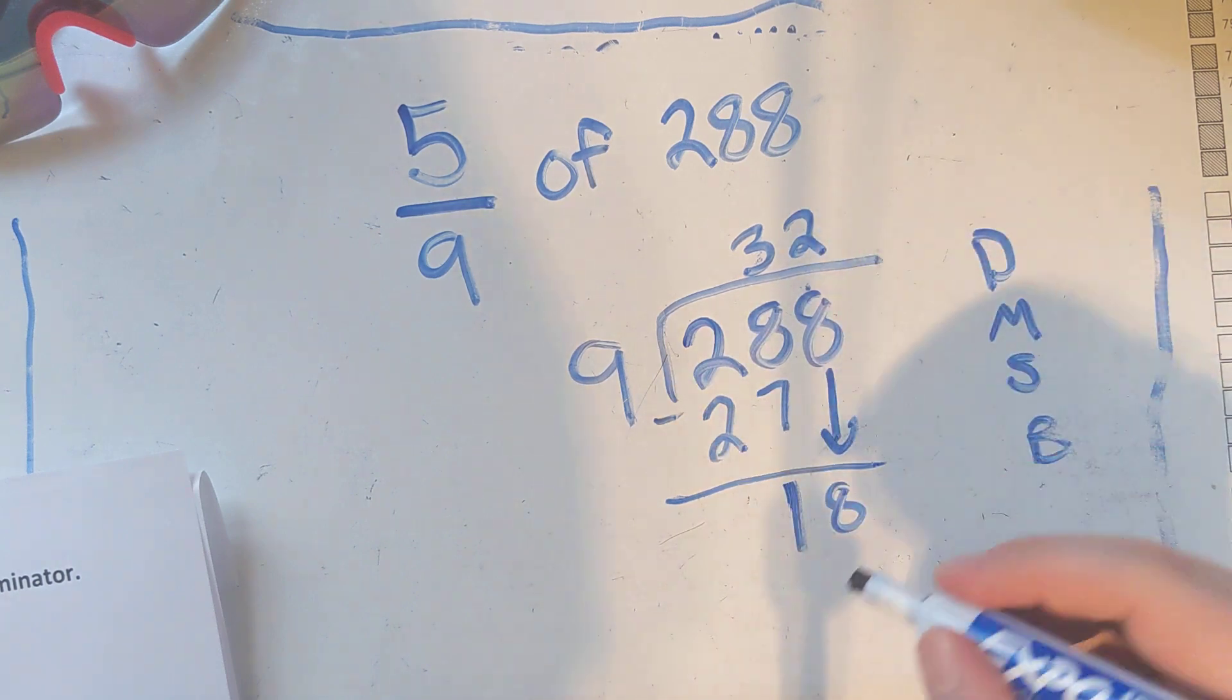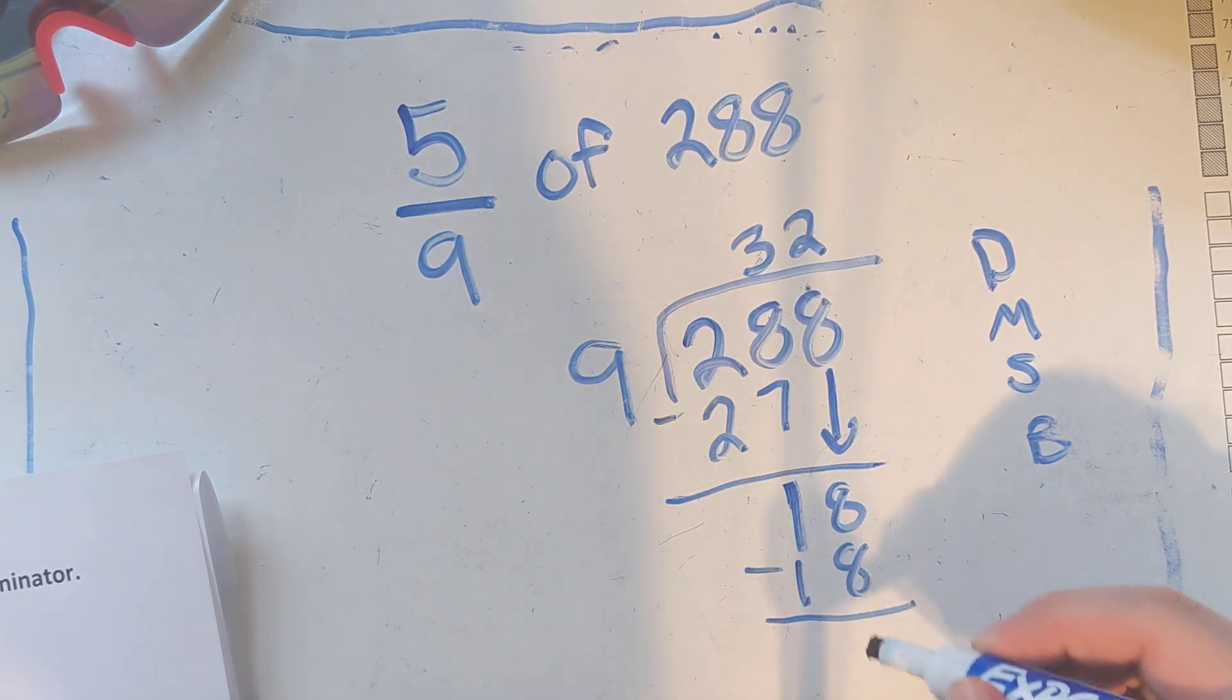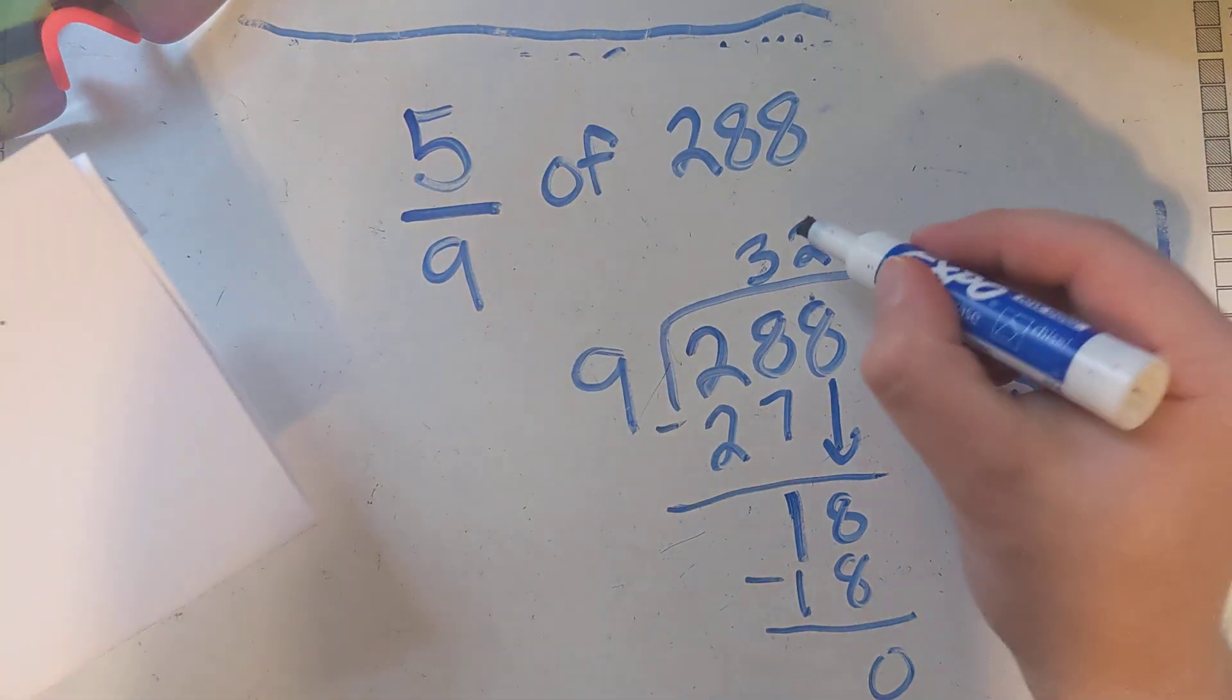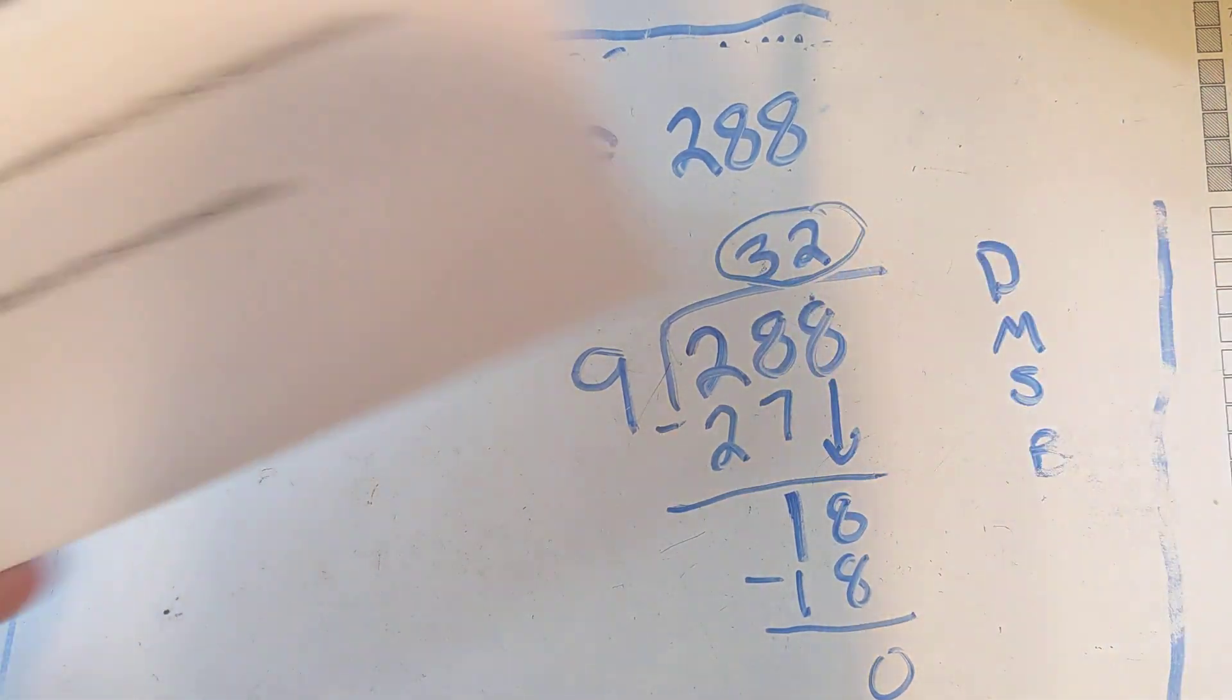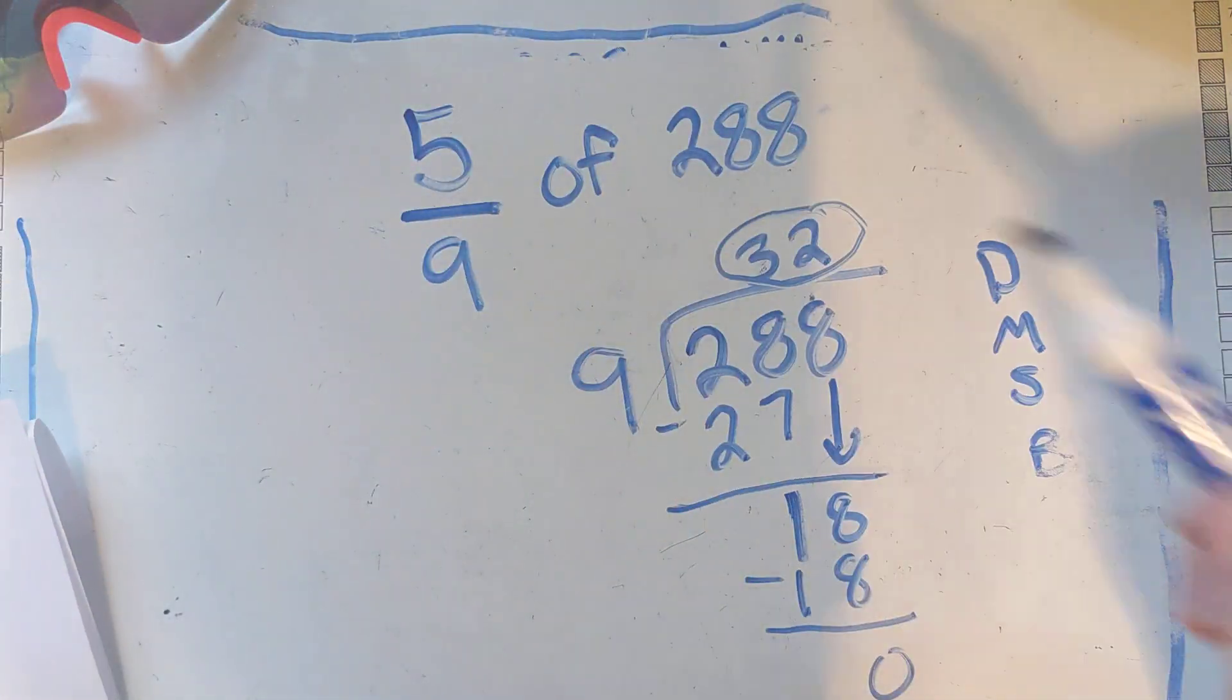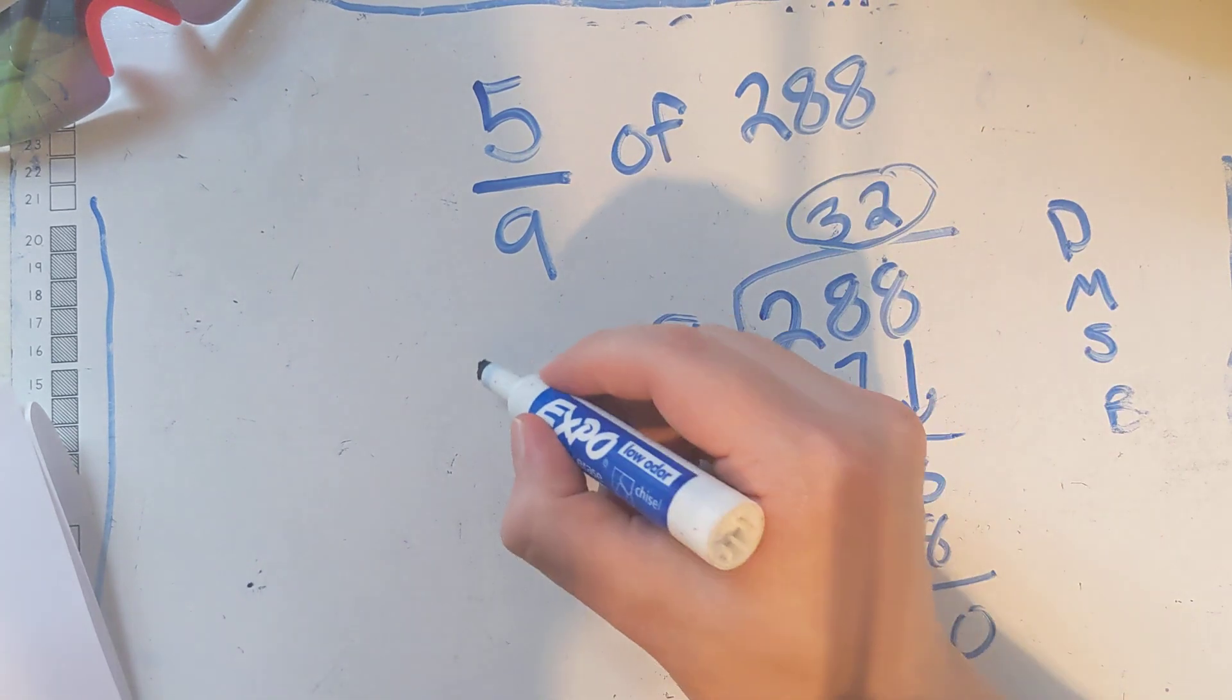Start the process back over again. How many times does 9 go into 18? It goes in there 2 times. 9 times 2 is 18. 18 minus 18 is zero. So we got 32 for our answer there. Now we're going to take that and multiply it by the numerator. Our numerator is 5, so now we're going to do 32...